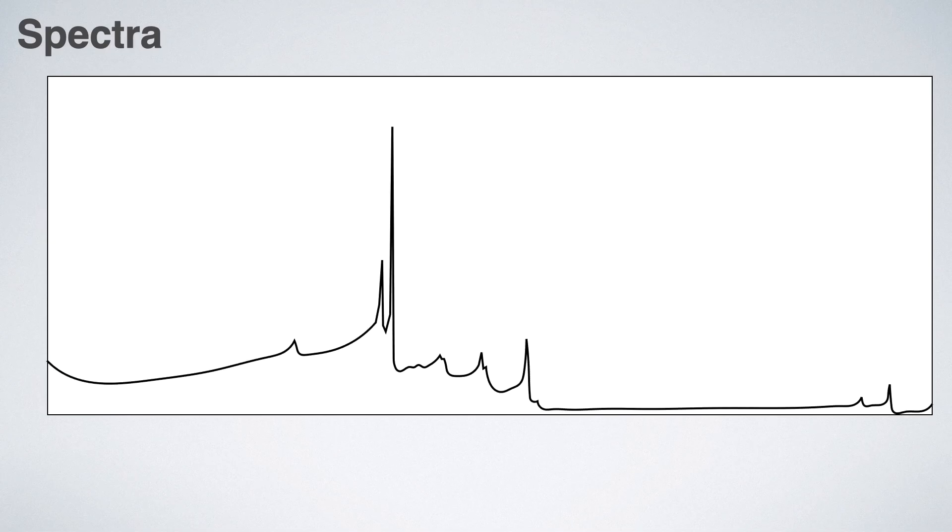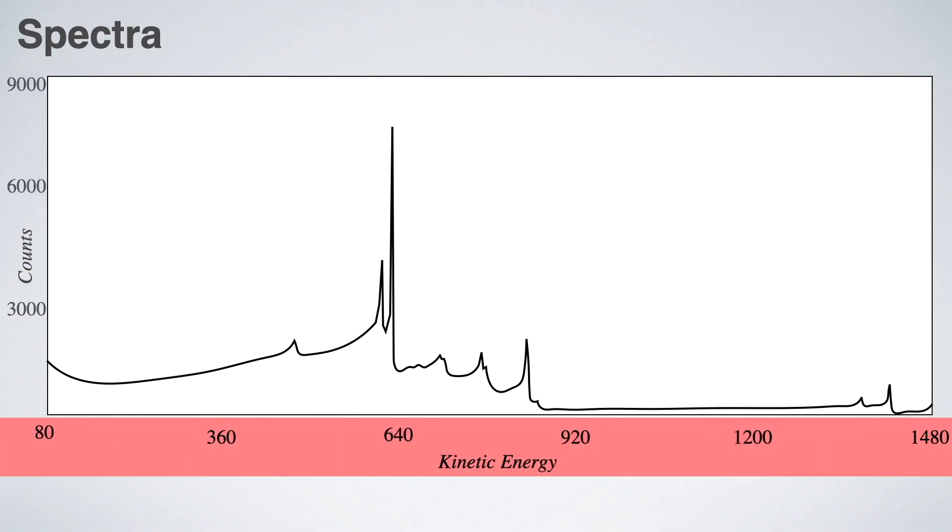Now let's talk about the spectra obtained from the XPS instrument. We have seen that the instrument gives a plot of kinetic energy versus the number of electrons counted. So number of electrons counted is plotted in Y axis and kinetic energy is plotted in X axis. It starts from the lower kinetic energy in the left and goes to higher kinetic energy in right as normally a graph is plotted.